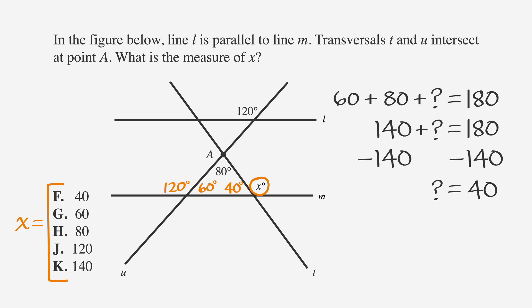Now, we can solve for the measure of X because all angles that form a line add up to, you guessed it, 180 degrees. So, X is 180 minus 40, which equals 140 degrees. Check the answers and lo and behold, answer choice K is the one.